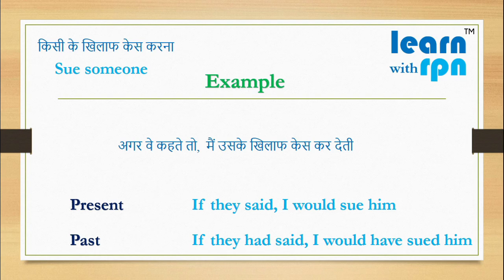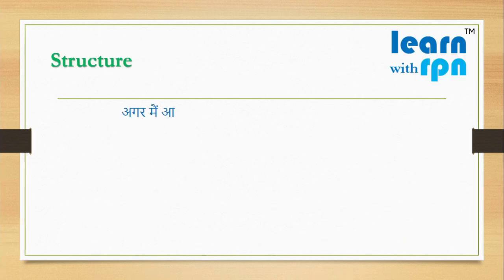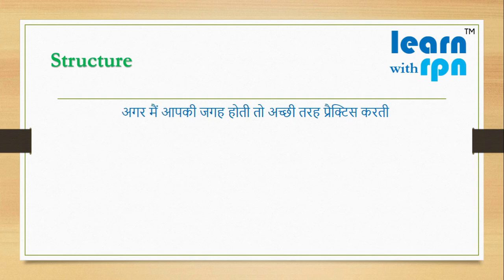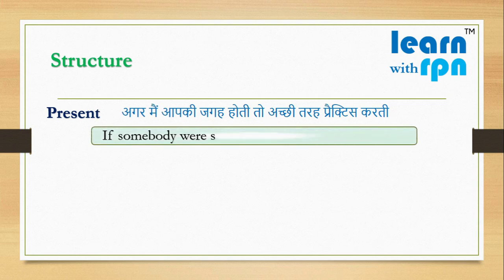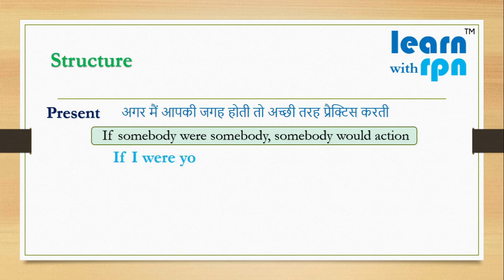Guys, conditional sentences are very easy if you do practice properly. अगर मैं आपकी जगह होती, तो अच्छी तरह practice करती. Wow! It's also a condition, and it is related to present. As I am saying now, here is a structure: If somebody were somebody, somebody would action. So as per structure: If I were you, I would do practice properly.